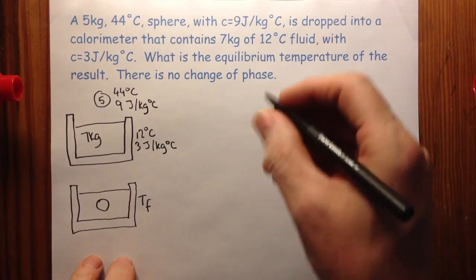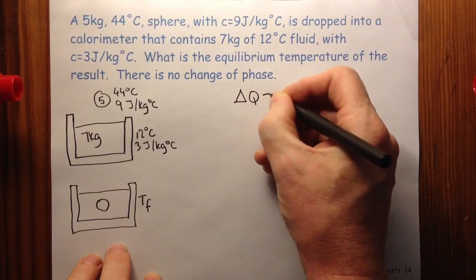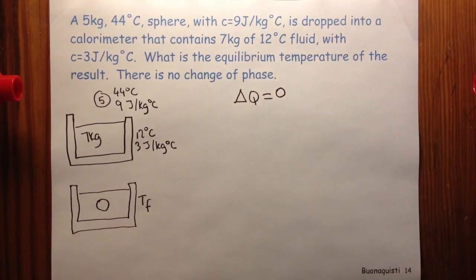So what I say for these is that inside a calorimeter the change in heat is equal to zero. That means that the heat given up by the hot object is used by the cold object.